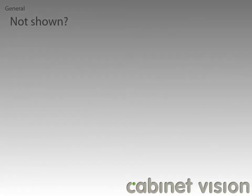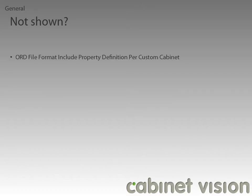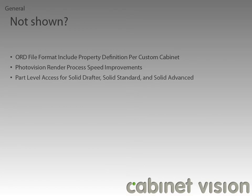There are a couple of new features that I didn't show off here, as they are a little more abstract, but I will take a moment to tell you what they are. As always, you can look to the Cabinet Vision help file to get more detail on these new features. You can now add additional property definitions for custom cabinets. We have sped up the rendering process for Photo Vision. And finally, we have added part level access to solid drafter, standard, and advanced modules for more control over individual parts.